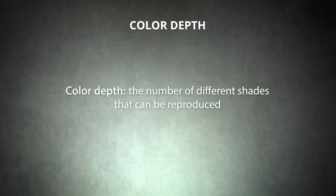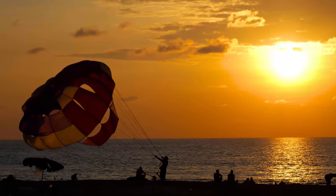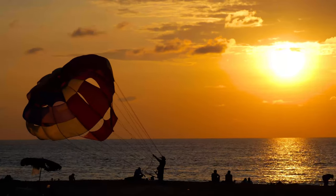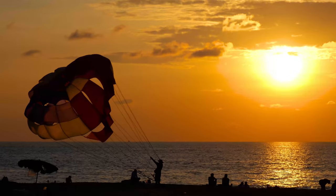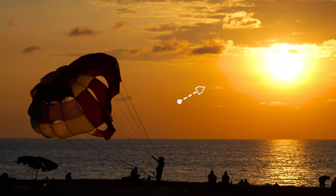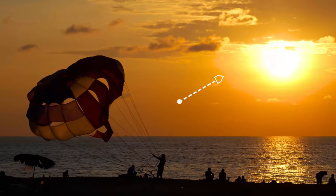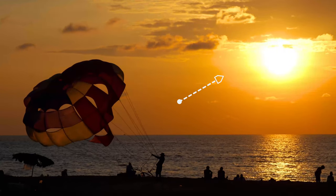Color space defines the range of colors a monitor can reproduce, but color depth defines the number of different shades that can be reproduced within that range. This is important when you are working with fine gradations of color. A higher bit depth monitor will be able to display more distinct colors, resulting in a smoother gradient since more of the in-between colors will be included. Color information, like other information, is stored in bits.